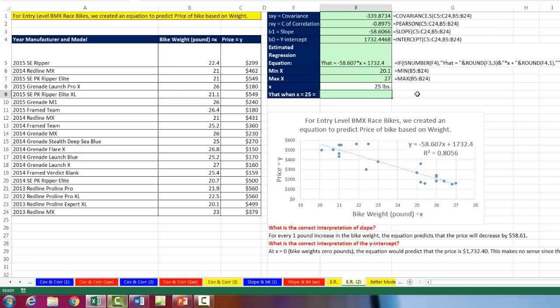All right, so now let's estimate what a 25-pound bike would be. Equals, and we have our slope of minus 58 bucks, times number of pounds, plus our y-intercept. And there it is. If we have a bike that's 25 pounds, our estimated regression equation predicts that the bike should cost 267 bucks.